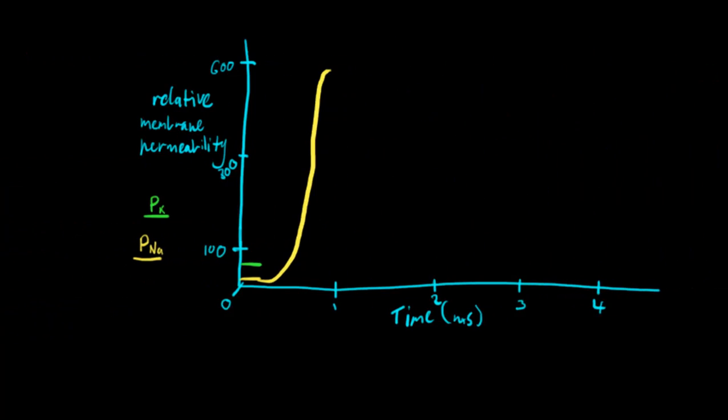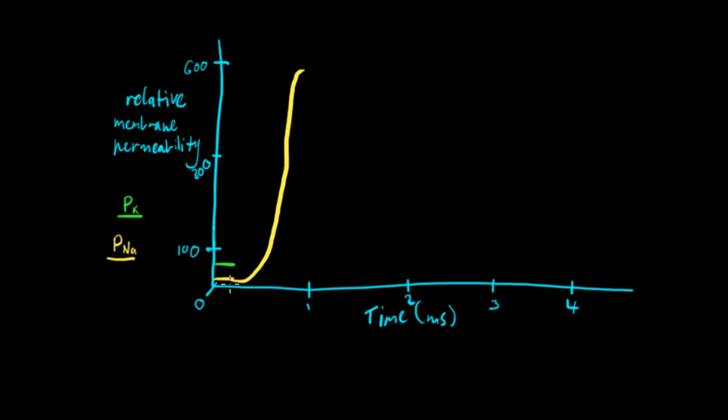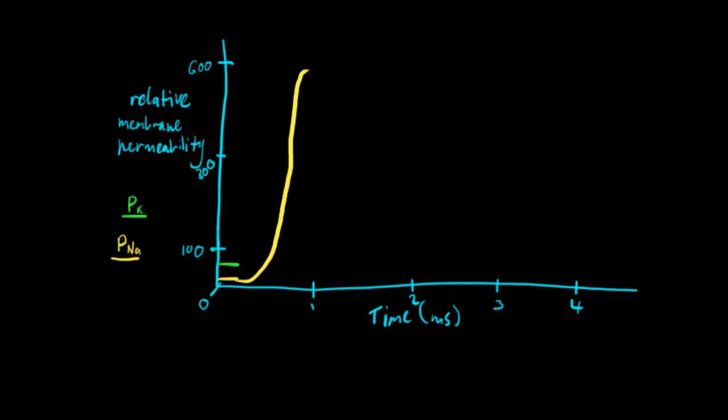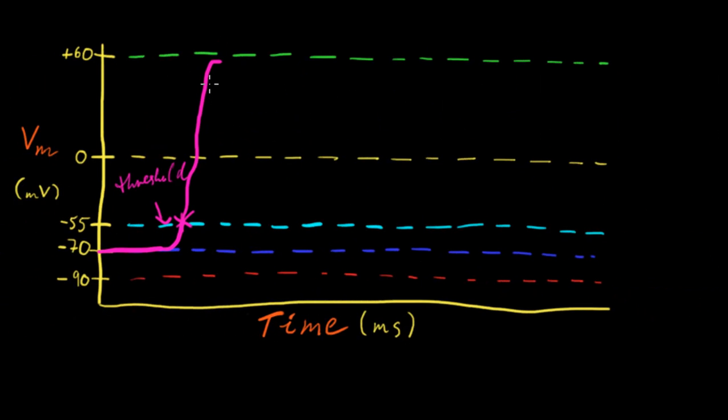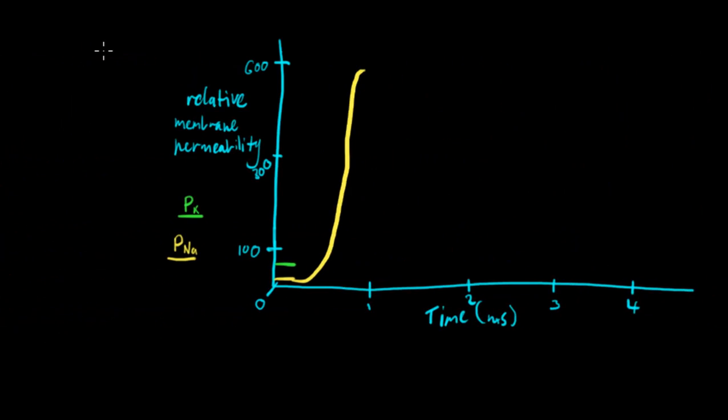But, it peaks and it's sort of like a positive feedback loop because the more positive that the membrane becomes, the more these voltage-gated ion channels are opening and therefore, the more it's letting in, able to let in, sodium because of the relative membrane permeability is going up. So, it's sort of a great big chain reaction